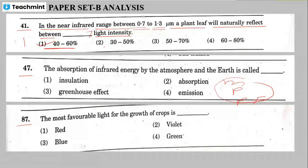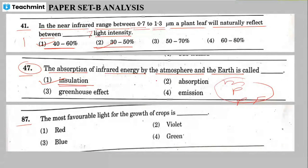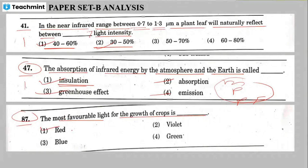Question 47: the absorption of infrared energy by the atmosphere and the earth is called insolation — that is the correct answer. You know what the greenhouse effect is: absorption and emission. Question 87: the most favorable light for the growth of crop is red light.